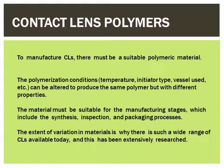As we all know, contact lens is a very delicate optical device placed directly over the cornea. Therefore, the polymer chosen for contact lens has to be biocompatible enough and should have all the required physical and chemical properties to be used comfortably over the cornea. Not only that, the polymer should be such that its properties can also be altered under various polymerization conditions like temperature, initiator type, and vessel used, so that the same polymer with various properties can be introduced. The material should also be suitable for the manufacturing stages, which include synthesis, inspection, and packaging processes.